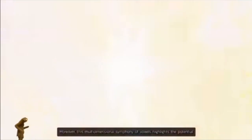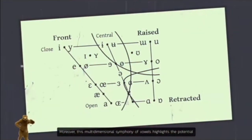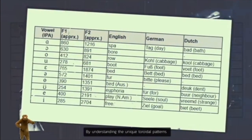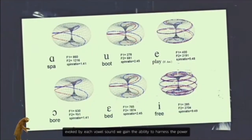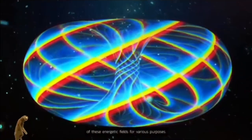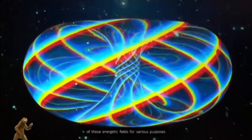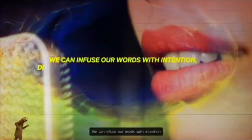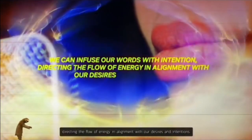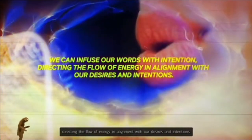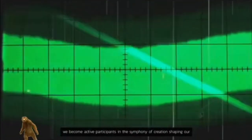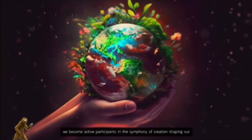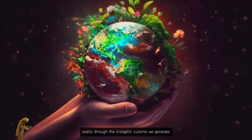Moreover, this multi-dimensional symphony of vowels highlights the potential for intentional and conscious use of language. By understanding the unique toroidal patterns evoked by each vowel sound, we gain the ability to harness the power of these energetic fields for various purposes. We can infuse our words with intention, directing the flow of energy in alignment with our desires and intentions. Through the conscious modulation of vowel sounds, we become active participants in the symphony of creation, shaping our reality through the energetic currents we generate.